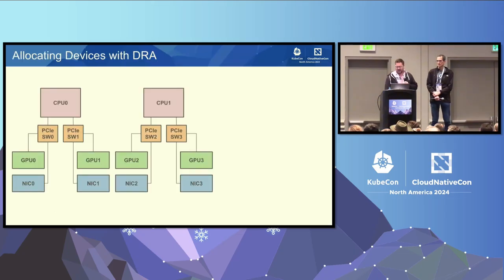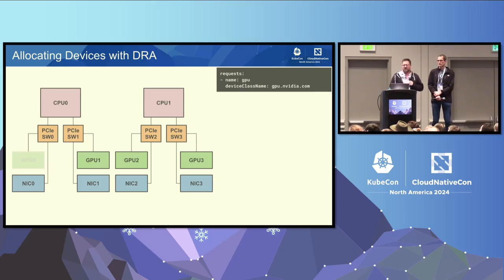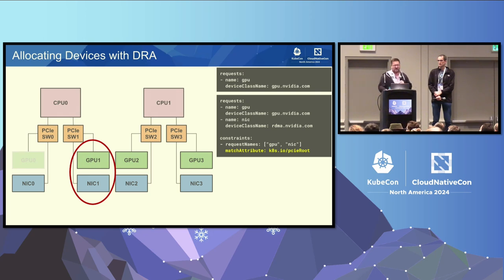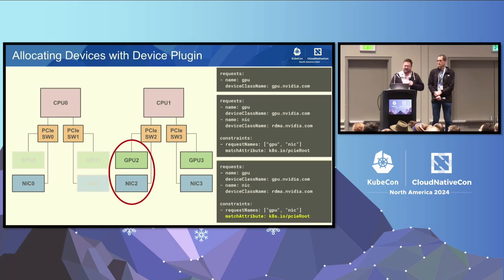Let's walk through the same setup but with a DRA request. First request comes in, just like before — picks the first GPU. Second one comes in, but now because of the match attributes, the scheduler will try NIC 0 and GPU 1 first, evaluate that it doesn't meet the constraints, discard that solution, and try the next one: GPU 1 and NIC 1, which meets all constraints. Now we can use GPU Direct between those, which dramatically increases throughput. The next request comes in, same thing — we land on the same PCI route and pick a matching pair instead of scattering everything around.